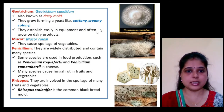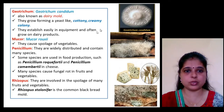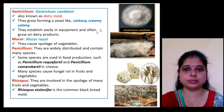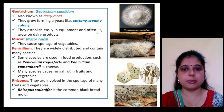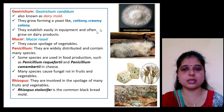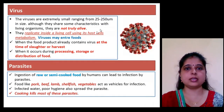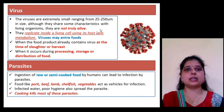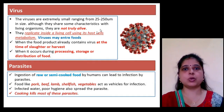Rhizopus species are involved in the spoilage of many fruits and vegetables. Rhizopus stolonifer is the common black bread mold, which affects bread.